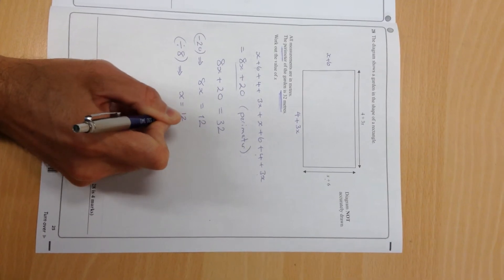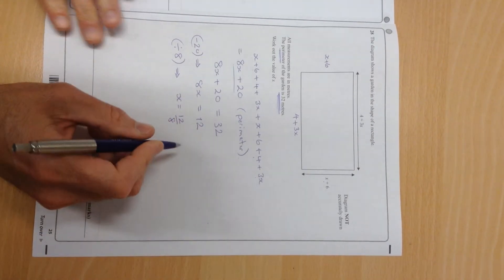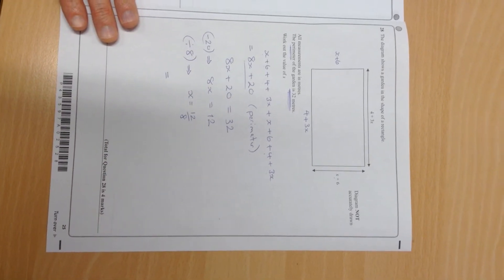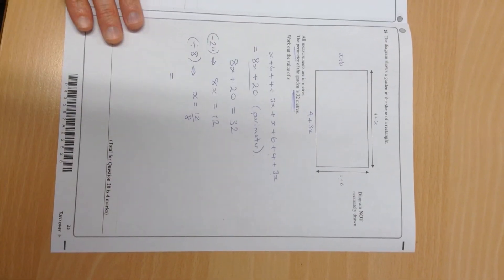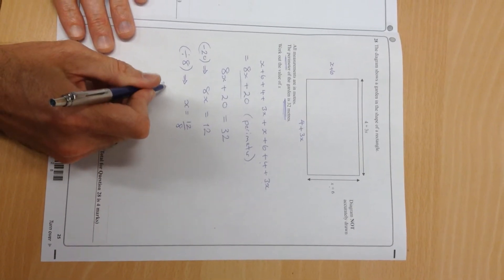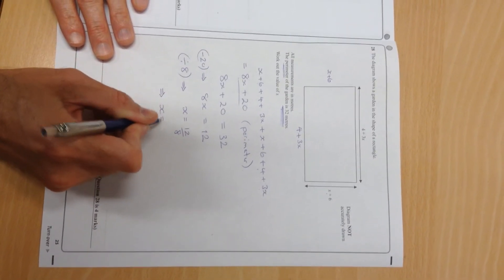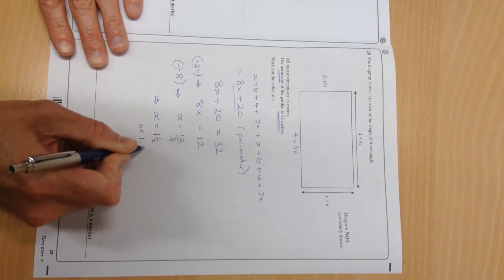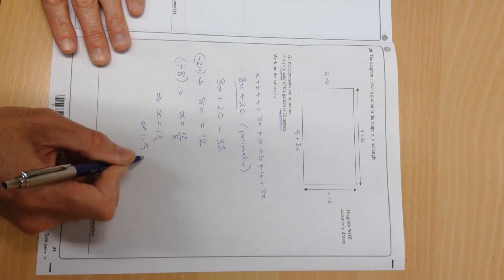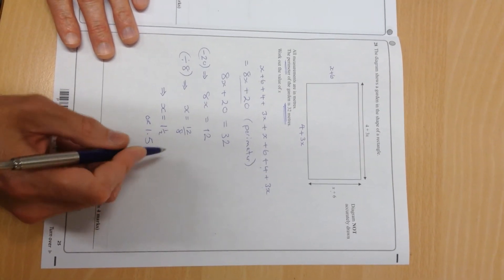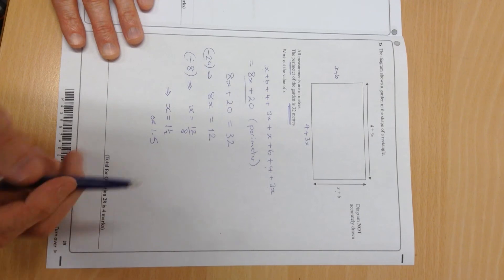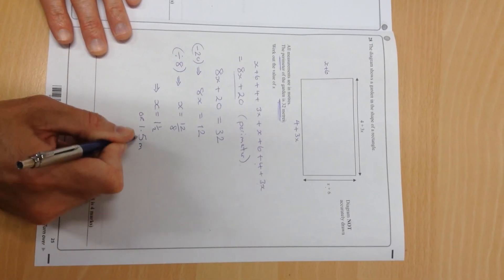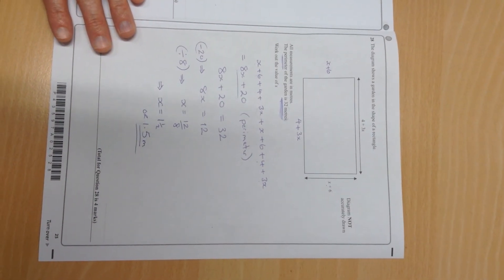So x is 12 over 8, and most people, well some of you, will realize that 8 goes into 12 one and a half times. So x equals 1 and a half, or even 1.5, and 1.5... 1.5 meters. And that is the answer.